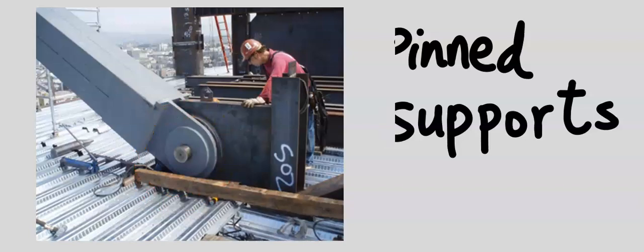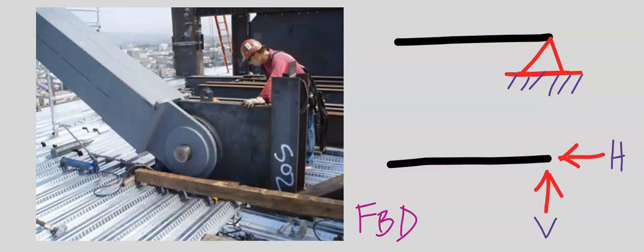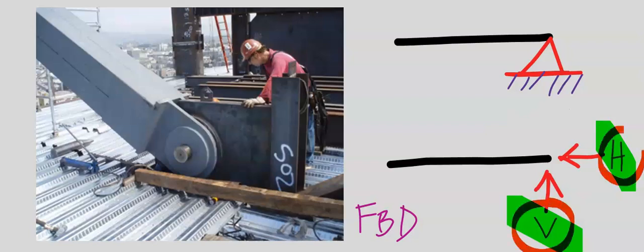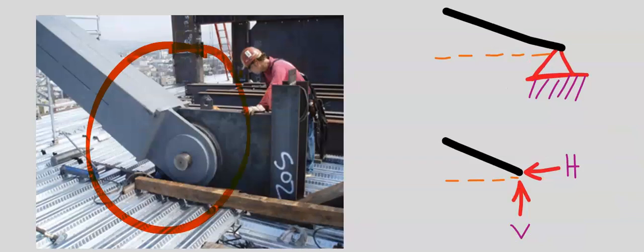A pinned support system is represented like this, and the free body diagram resists both horizontal forces and vertical forces. However, a pinned support cannot resist bending moments. Hence we'll have only two resistance forces. This is the representation of the pinned support system.